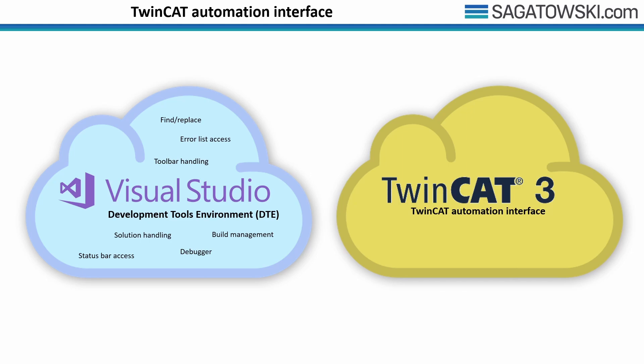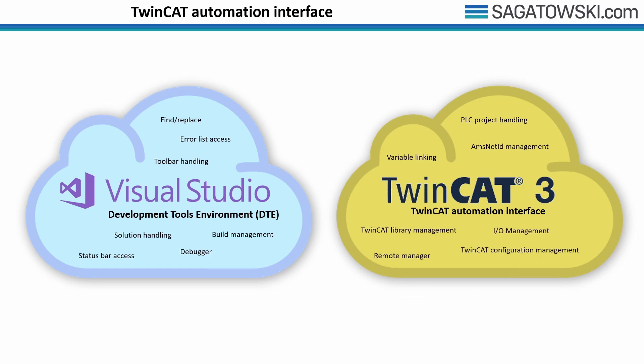As the TwinCAT XAE shell is based on Visual Studio, the DTE also applies to it. Through the Automation Interface we get access to everything that Beckhoff have added on top of Visual Studio — TwinCAT-specific items such as PLC project handling, linking of variables, management of inputs and outputs, and much more. By utilizing these two together we can fully programmatically automate various tasks for our automation software.